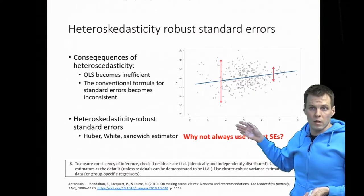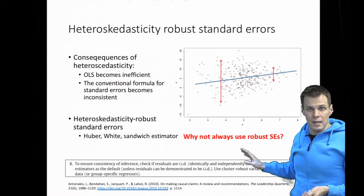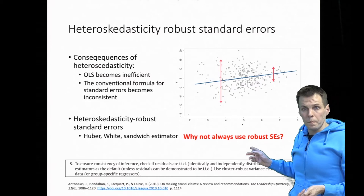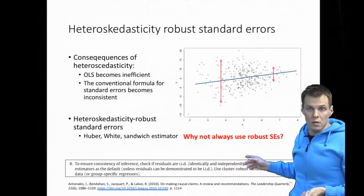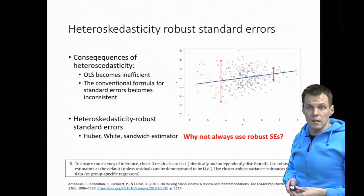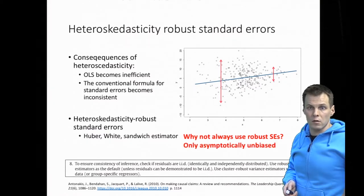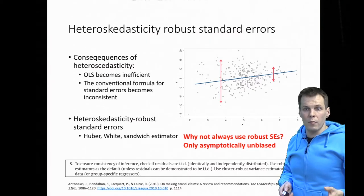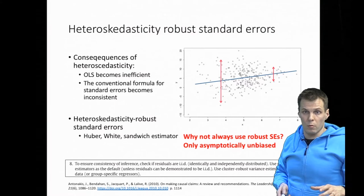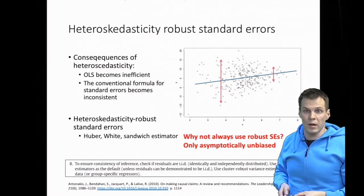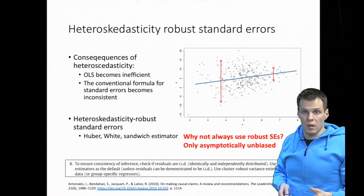For example, John Fox, who has written most of the R packages used in this course, argues we shouldn't use robust standard errors unless we need them. When you relax an assumption, that always comes with a cost. Normal standard errors are unbiased in all sample sizes, but robust standard errors are only asymptotically unbiased — meaning they can be biased in small samples. So if heteroscedasticity is absent or mild, conventional standard errors are probably better in small samples. With thousands of observations, using robust standard errors as a rule is probably a good idea.